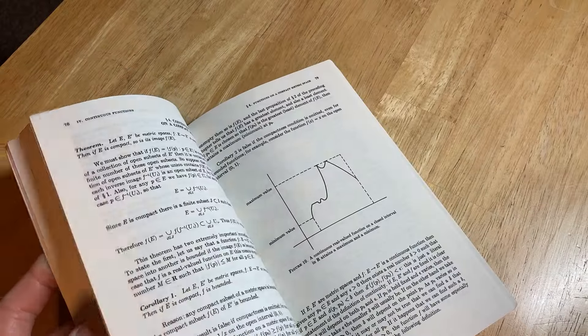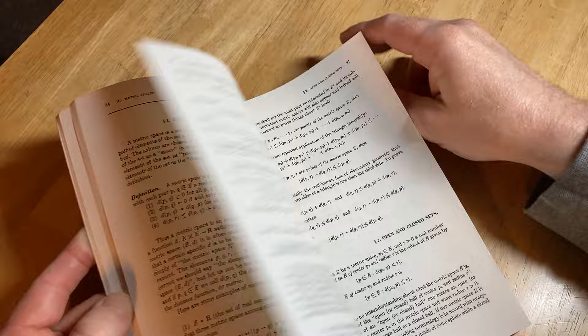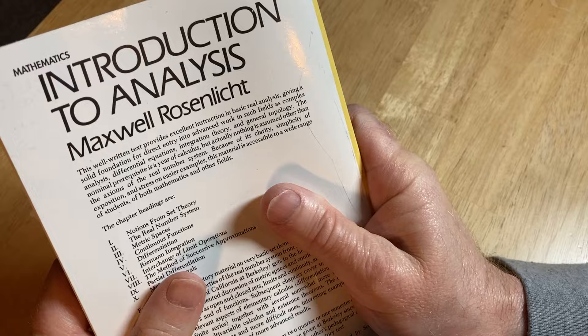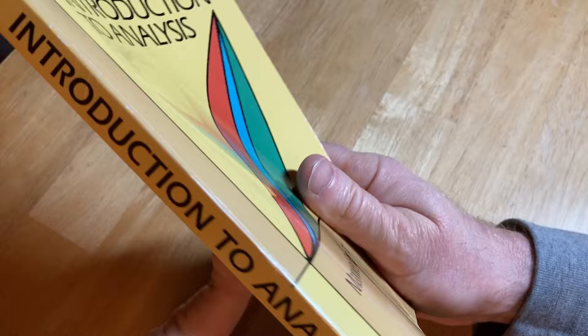This is a small analysis book. By small I don't mean that it doesn't contain a lot of information, I mean physically it's pretty small. It's called Introduction to Analysis by Maxwell Rosenlicht, and it's a Dover book, meaning that it's a reprint of an old book.